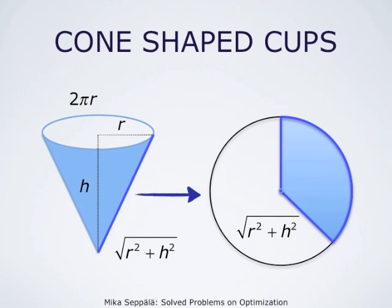We do not get the whole disc, of course. We get only a sector of the disc, defined by the fact that the length of the circular arc on the boundary of the sector is 2 times pi times r. So this blue domain on the right, the blue sector of the disc, corresponds to the cone on the left. This is how the flattening of the cone works.